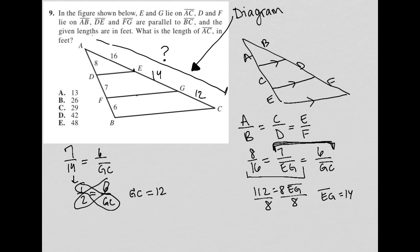So now in order to figure out the entire length of AC, I'm just adding up all the numbers. 16 plus 14 equals 30 plus 12 equals 42. And therefore, the answer is choice D.